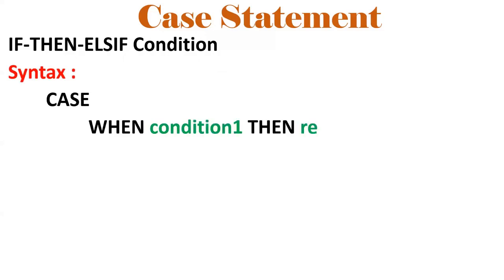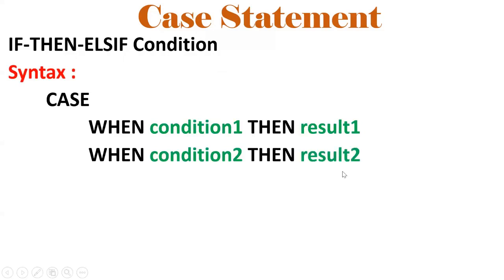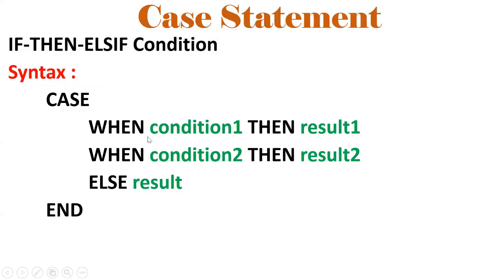The syntax will be: CASE WHEN condition one is satisfied, then we need to display result one. In a similar fashion, WHEN condition two is satisfied, then result two we need to display. Suppose when these two conditions fail, we go to the ELSE block — else block gives the default result. So: CASE WHEN condition one THEN result, WHEN condition two THEN result, and if no conditions are matched, it goes to the ELSE section.